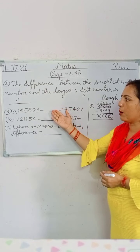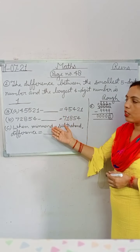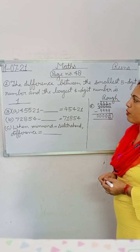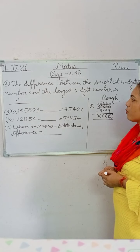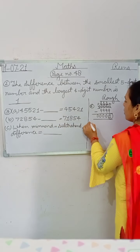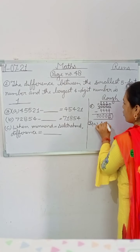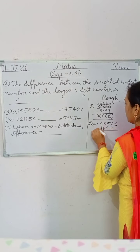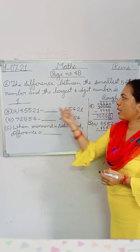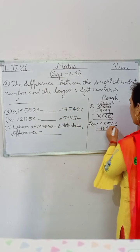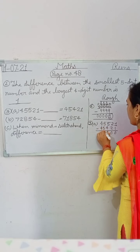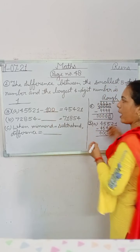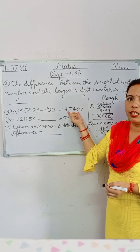Now in question 3 you have fill-in-the-blank questions. In A, you have 45,521 minus blank equals 45,421. For the missing number, subtract 45,521 minus 45,421: one minus one is zero, two minus two is zero, five minus four is one, five minus five is zero, four minus four is zero. That means one hundred is the correct answer — when you subtract 100 from the first number, you get the right-side number.